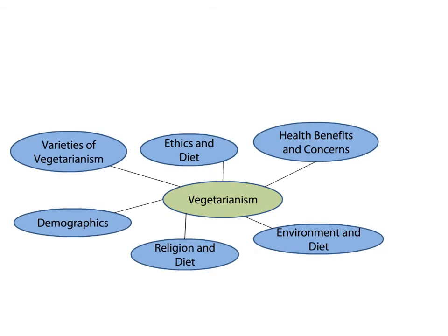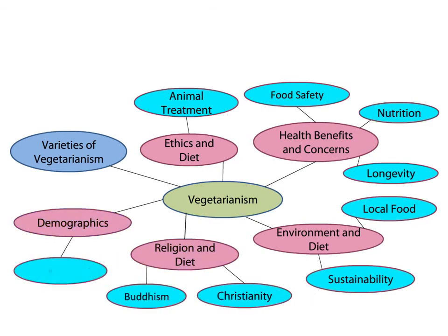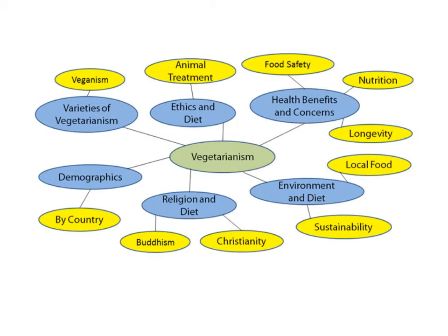I now want to delve deeper and identify examples or related ideas to my subtopics. For instance, ethics and diet is a subtopic of vegetarianism, and animal treatment is an important example of it. Continuing to do this for all of my new subtopics, I now have an extended list of concepts to explore. We may not use all the information that we write down, but this approach lets us easily see the various relationships among our possible topics.